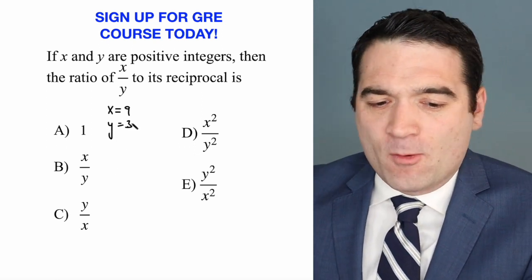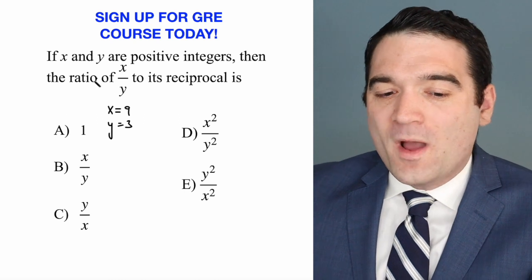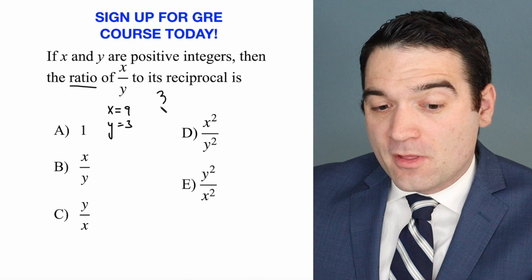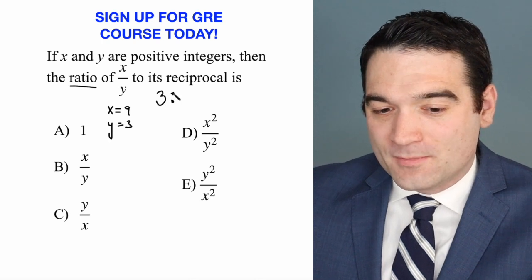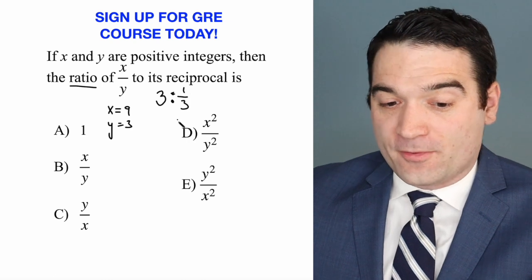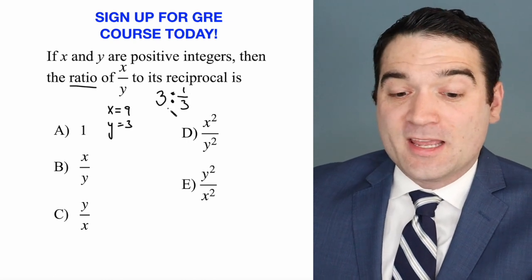Okay, so if x equals 9 and y equals 3, then we're saying what is the ratio of 9 over 3, so 3, to—I'm going to use the ratio there—its reciprocal, which is 1 third. Right? The reciprocal of 3 is 1 third.